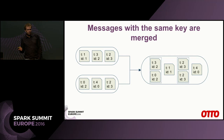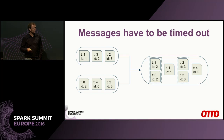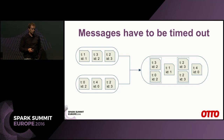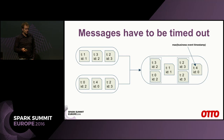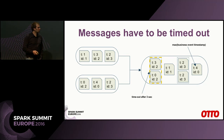The easy part is: messages with the same key are merged. We have some business key, like an ID, and we want to merge them into merged sets. But messages also have to be timed out — because there might be messages with ID 1 that won't have any corresponding message in the second source. So you have to cover this with some kind of clock. We came up with the maximum of the business event timestamp — every business event has its event timestamp for when it took place, when the customer clicked something.